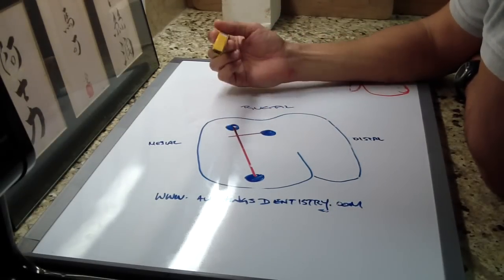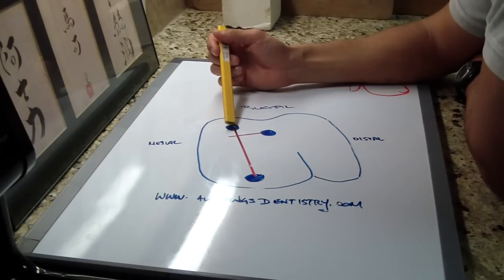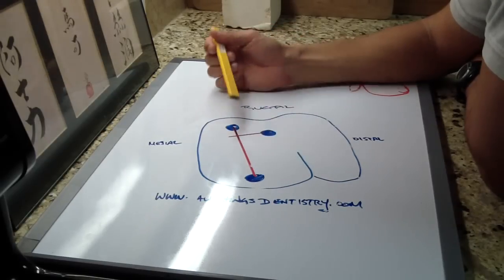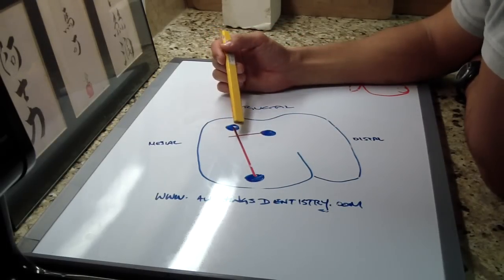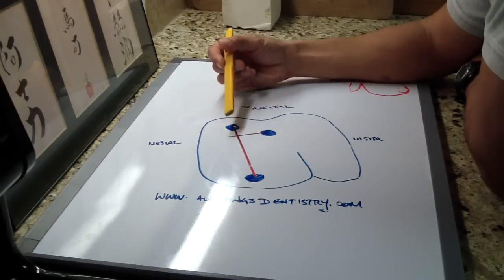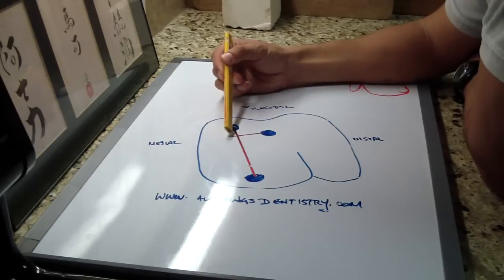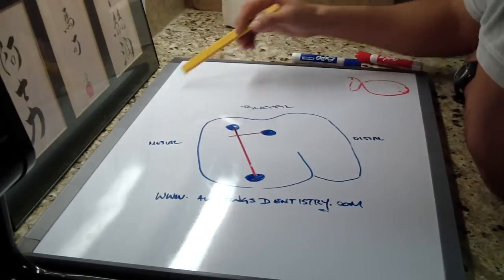So what you do is imagine in your mind when you're doing your endodontic access, draw a line from the MB1 to the palatal canal, and from the distal buccal, draw a line that's perpendicular to the MB1-palatal line. You're going to start scouting around in this region here.